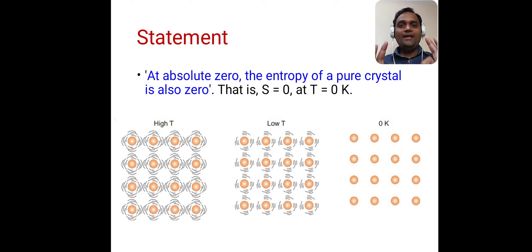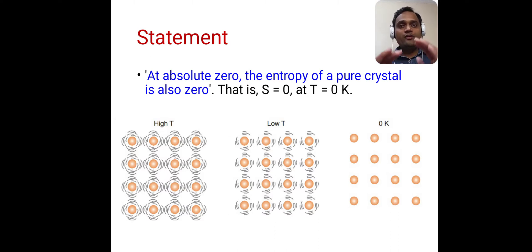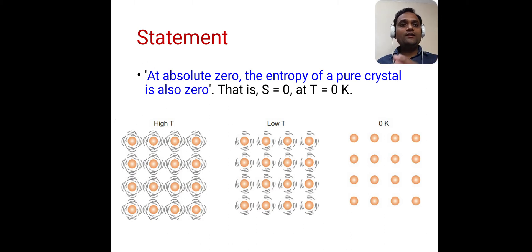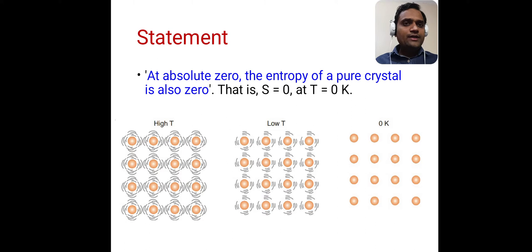At absolute zero, the entropy of a pure crystal is also zero — that is, S = 0 at T = 0 Kelvin. Let us see this with a diagram.